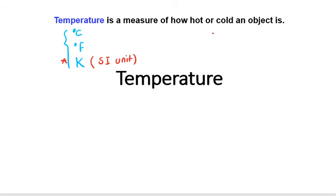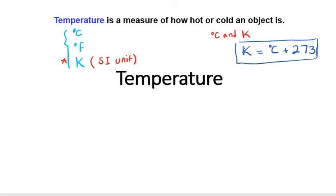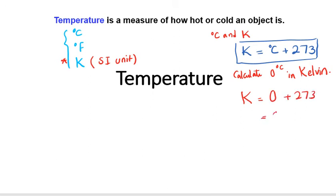To find the relationship between degrees Celsius and Kelvin, we use the equation: K = °C + 273. For example, if we calculate zero degrees Celsius in Kelvin, we say K = 0 + 273, which gives us 273 K. So zero degrees Celsius is equal to 273 K.